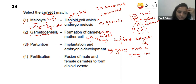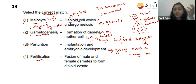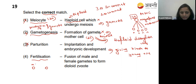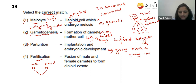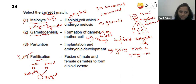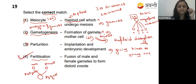Option four - fertilization is the fusion of male and female gametes to form the diploid zygote. Yes - male and female gametes fuse to form a single cell, the zygote. That is correct. So option four is the correct match.